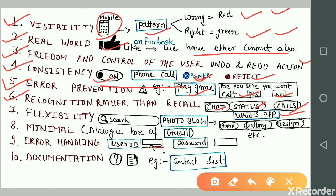Principle number seven is flexibility. Flexibility and efficiency of use: the system must be easy for lay users but flexible enough for advanced users. If you search something on Google...